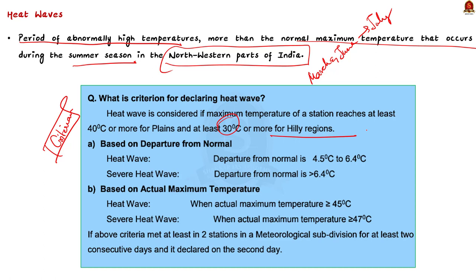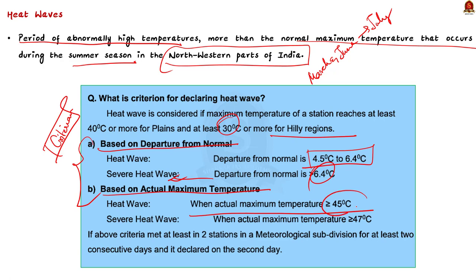To describe a heat wave, we look at two factors. First, departure of the maximum temperature from its normal state: a heat wave occurs when the temperature departs from normal by 4.5 to 6.4°C, and a severe heat wave occurs when departure exceeds 6.4°C. Second, deviation of actual maximum temperature: a heat wave occurs when the actual maximum temperature is above 45°C, and a severe heat wave occurs when it is above 47°C. For coastal stations, a heat wave is declared if the maximum temperature deviates by a minimum of 4.5°C from the average, provided the actual maximum temperature is at least 37°C.